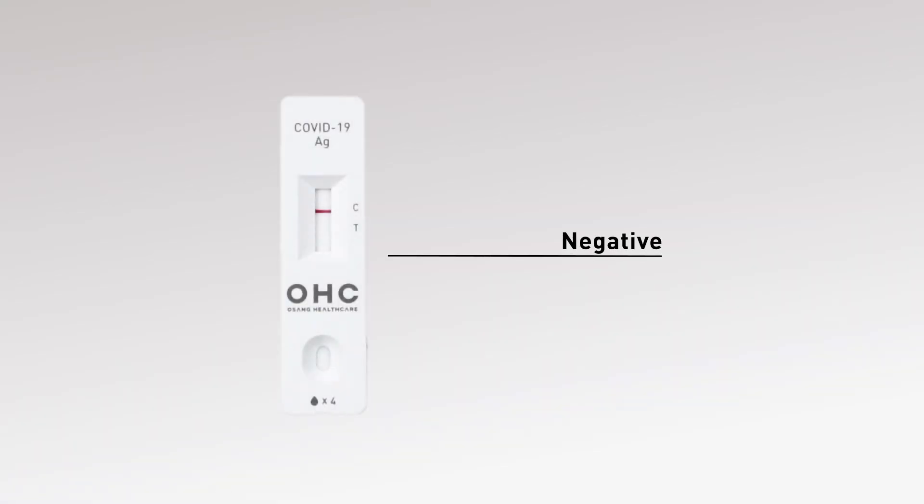The colored line appears in the control line region C, and no line appears in the test line region T. The result is considered negative.